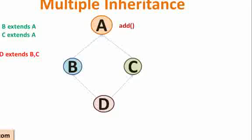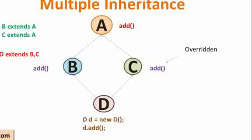What happens is, say we have a method called add() in class A, and B has overridden the add method, and C has also overridden the add method. Now if you try to access this add method using the object of D...